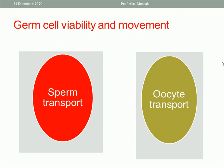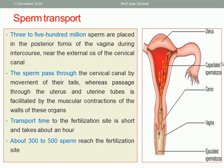Regarding germ cell viability and movement — sperm transport and oocyte transport. For sperm transport: three to five hundred million sperm are placed in the posterior fornix of the vagina during intercourse. This is the seminal pool in the posterior fornix, containing millions of sperms.